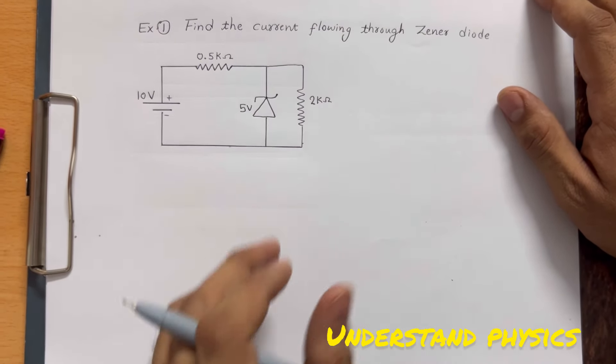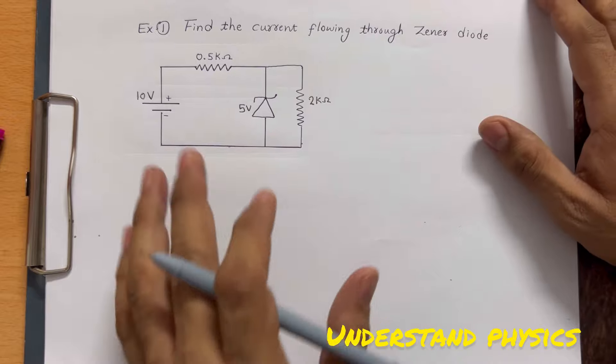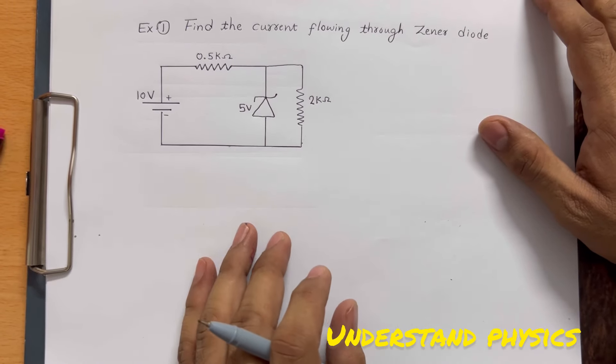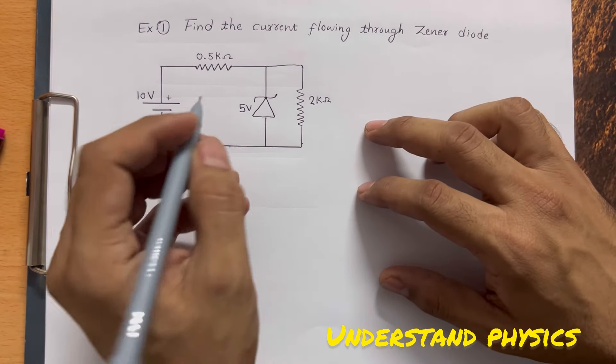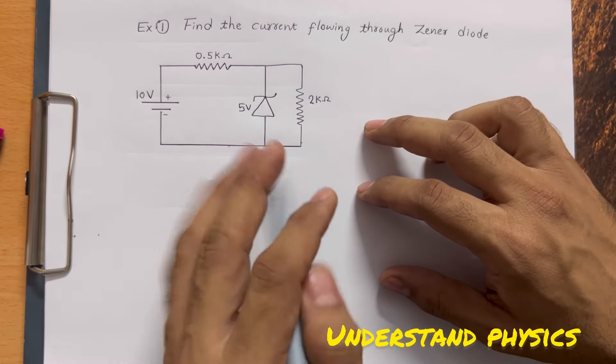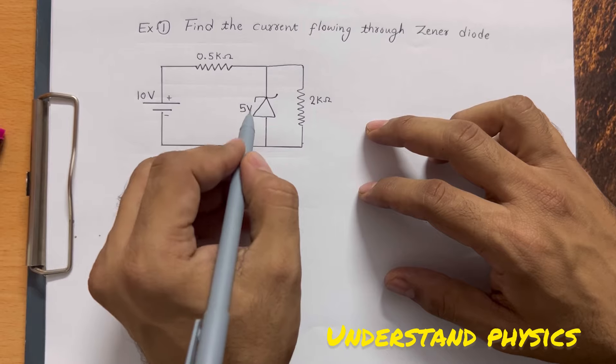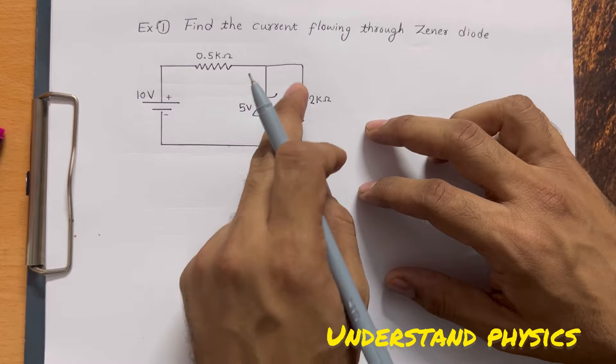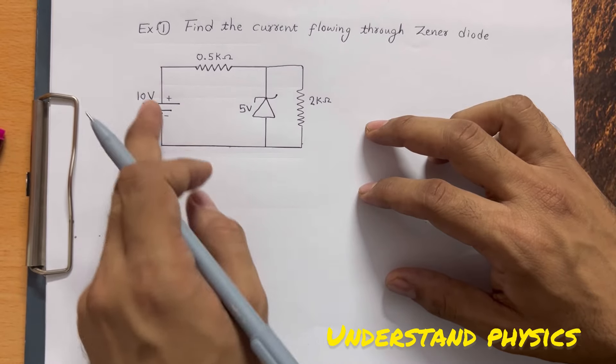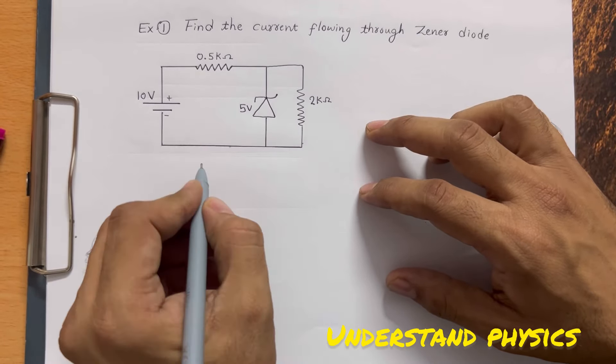Let's try this problem on the Zener diode. First, read the question carefully. We have to find the current through the Zener diode. This 5 volts is the potential difference across the Zener diode. This circuit diagram is normally called a voltage regulator diagram.